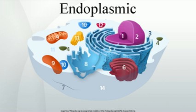Smooth endoplasmic reticulum is found in a variety of cell types, both animal and plant, and it serves different functions in each. The smooth endoplasmic reticulum also contains the enzyme glucose-6-phosphatase, which converts glucose-6-phosphate to glucose, a step in gluconeogenesis. It consists of tubules located near the cell periphery, which sometimes branch forming a network that is reticular in appearance. In some cells, there are dilated areas like the sacs of rough endoplasmic reticulum. The network of smooth endoplasmic reticulum allows for an increased surface area devoted to the action or storage of key enzymes and their products.